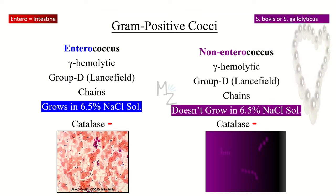The only differentiating feature is that enterococcus grows in 6.5% salt solution, but non-enterococcus does not grow in that 6.5% salt solution. Both are catalase negative, and you can visualize them in these pictures.